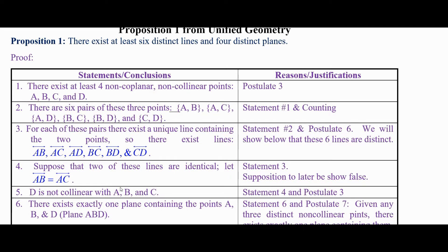Step two: there are six pairs of these points — the set {A,B}, the set {A,C}, the set {A,D}, the set {B,C}, the set {B,D}, and the set {C,D}. That's just taking those four distinct points and counting and organizing them.